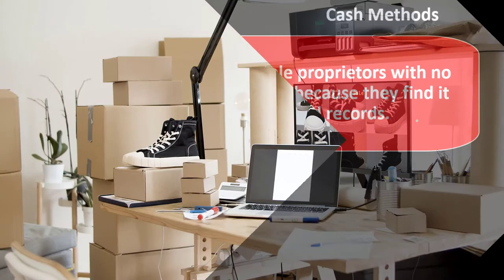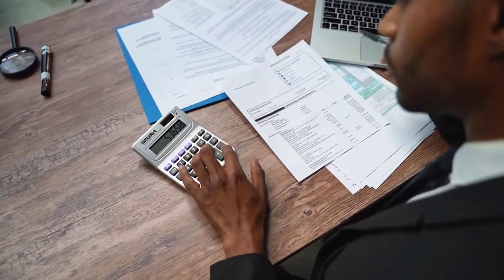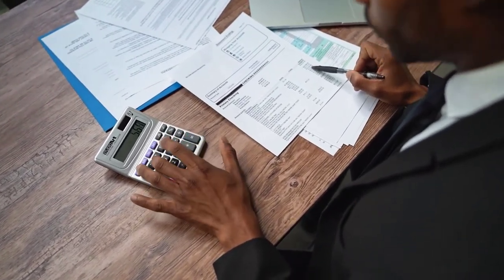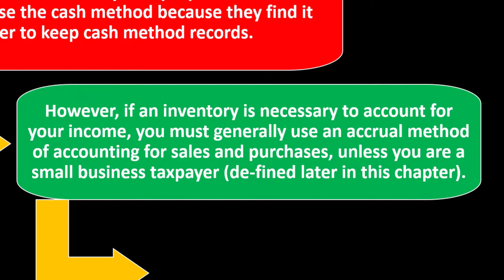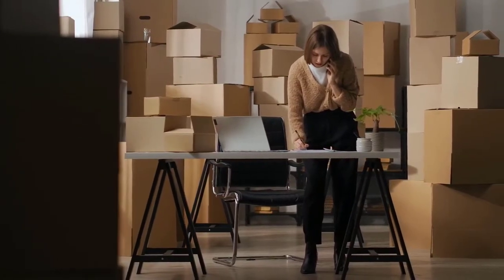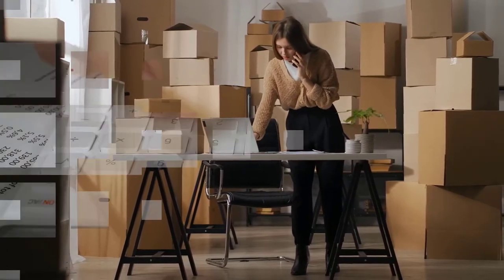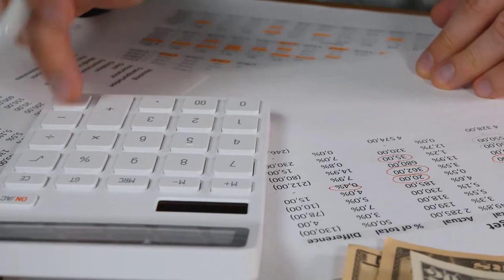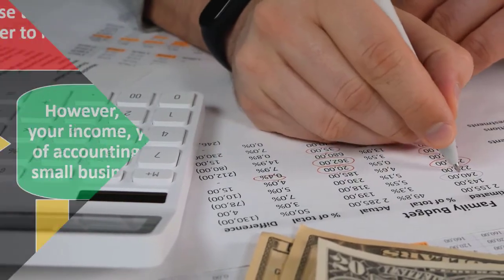It's quite possible that many businesses might be doing an accrual method because they have to invoice on the revenue side, but maybe not on the payment side — maybe they're just making cash payments. That would be a hybrid method between cash and accrual. However, if inventory is necessary to account for your income, you must generally use an accrual method of accounting for sales and purchases, unless you are a small business taxpayer as defined later. You want to think about whether it's beneficial to be on a cash basis, and whether tracking inventory is a significant part of your process.